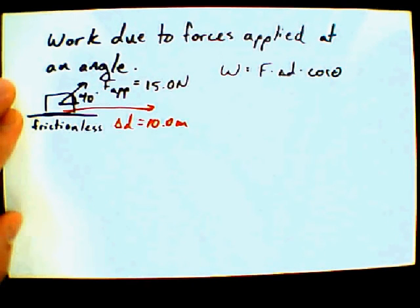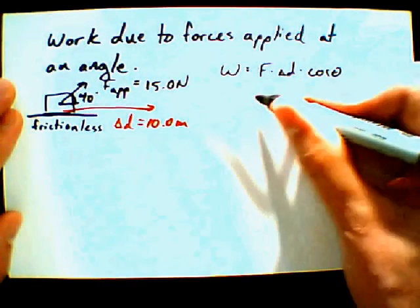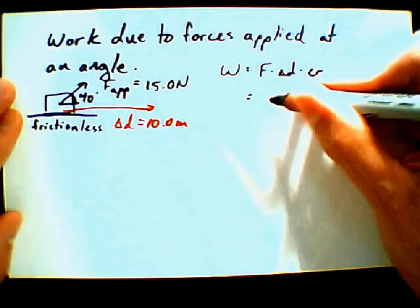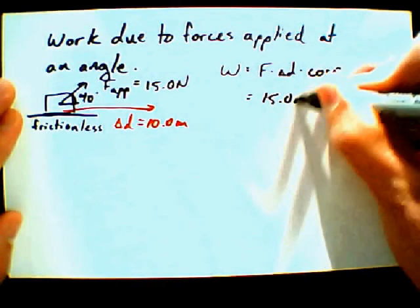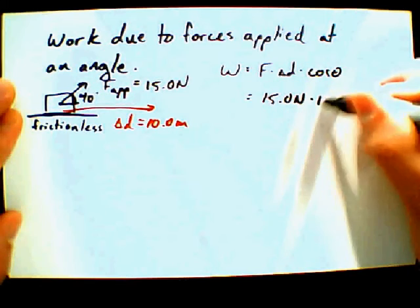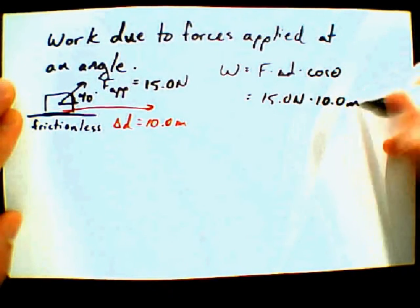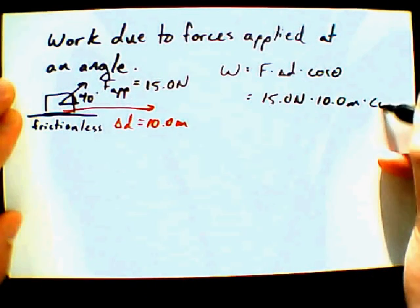So, work is equal to force times displacement times cosine of theta. And we say that the applied force is equal to 15.0 newtons. The displacement is equal to 10.0 meters. This time, cosine of theta. We've got cosine of 40 degrees.